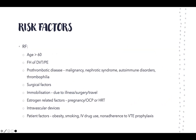This explains many of our risk factors for DVTs. A big one is age. If you have a family history of DVTs or pulmonary embolism, that might indicate an underlying genetic cause predisposing the person to be more coagulable. Prothrombotic diseases such as malignancies, nephrotic syndrome, autoimmune disorders, or thrombophilias can also predispose someone to more clots.